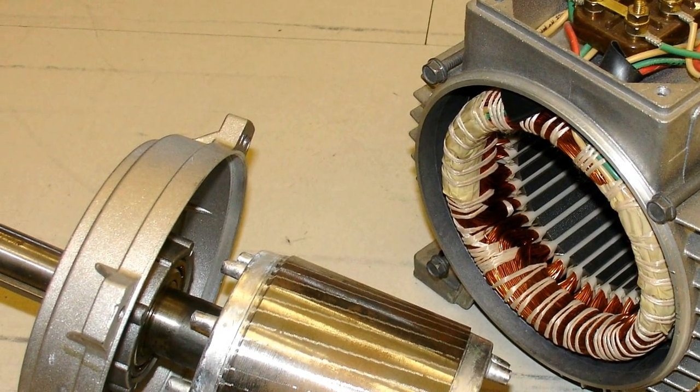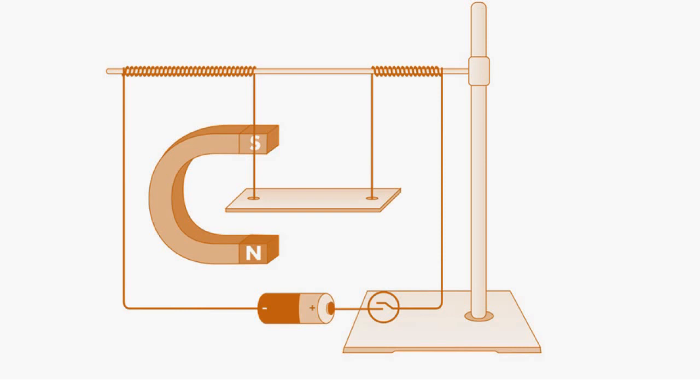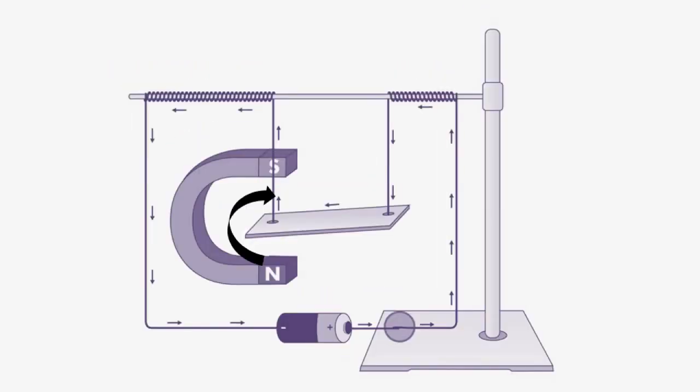We suspend a small aluminum bar from a stand using a copper wire. Now we place a powerful horseshoe magnet such that the aluminum bar lies between two poles. The north pole is vertically below the bar. Now, if we send electricity through this bar, it will get displaced. This means if we keep the electricity carrier in a magnetic field, a force will be exerted on the carrier.